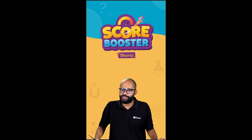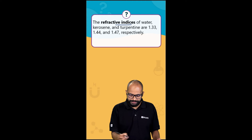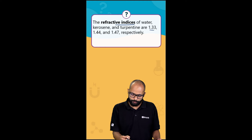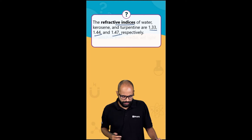Welcome to Scope Boosters. The question for today is: the refractive indices of water, kerosene, and turpentine are 1.33, 1.44, and 1.47 respectively.